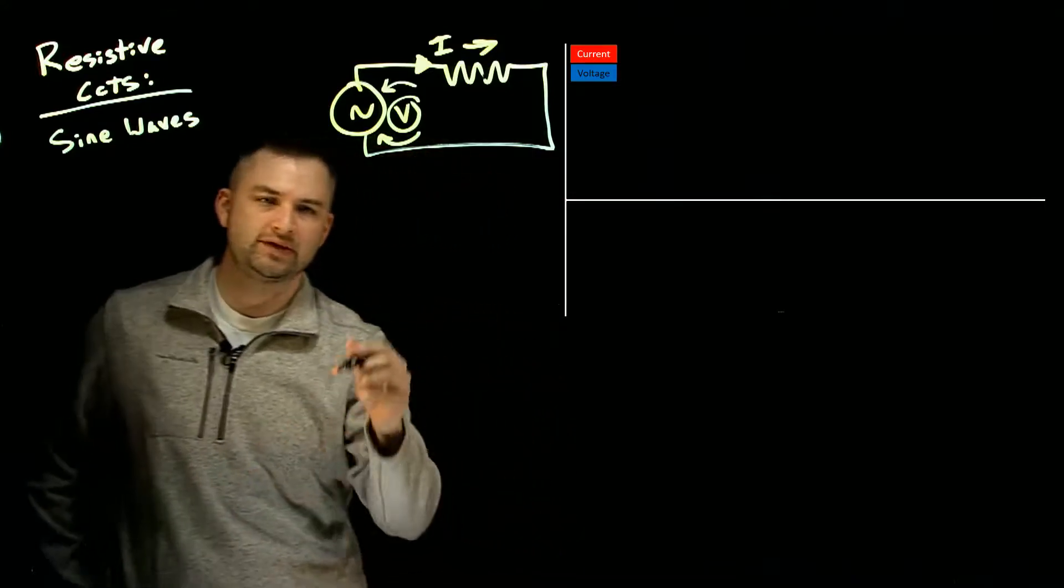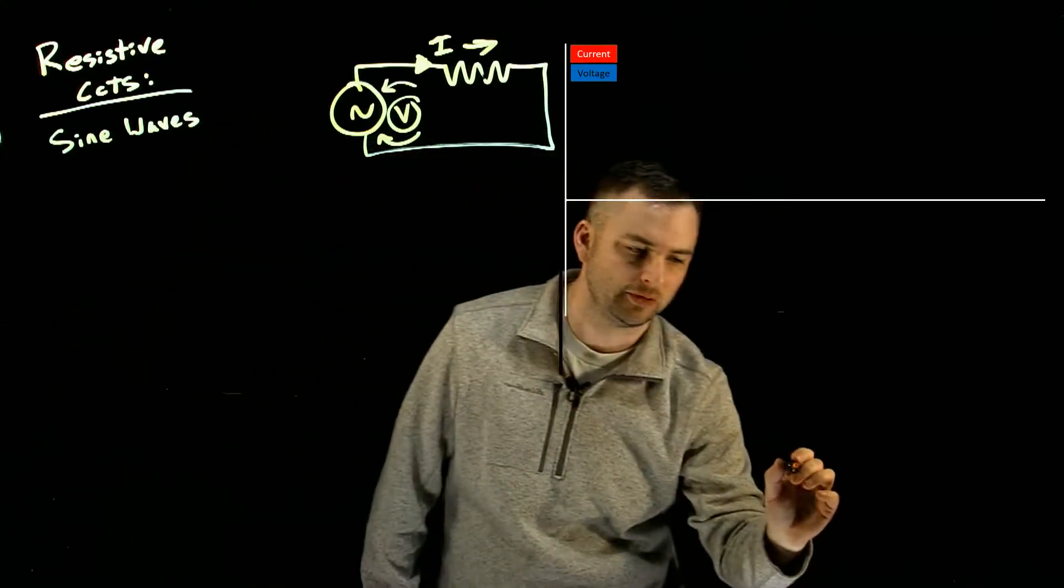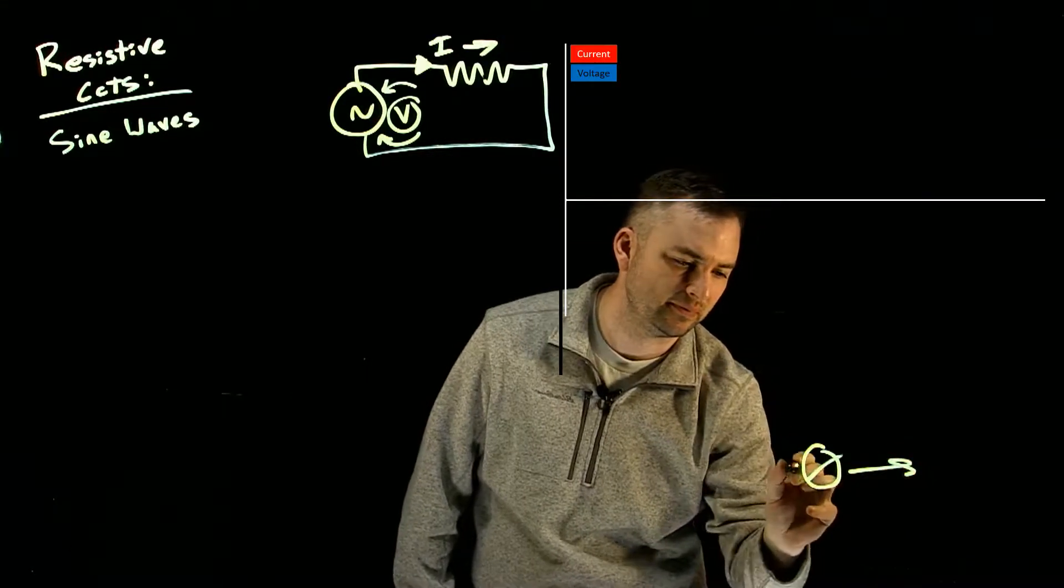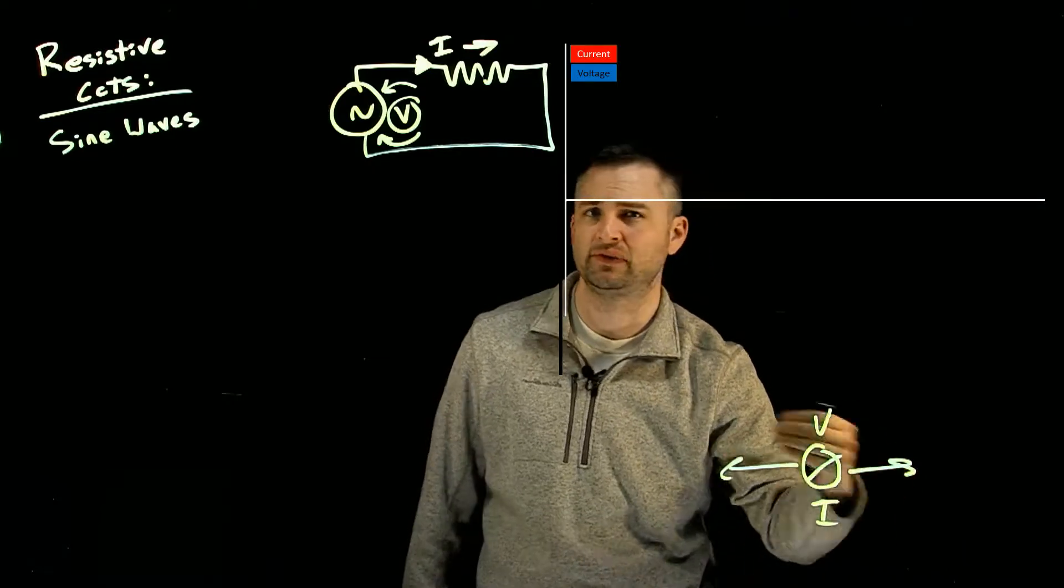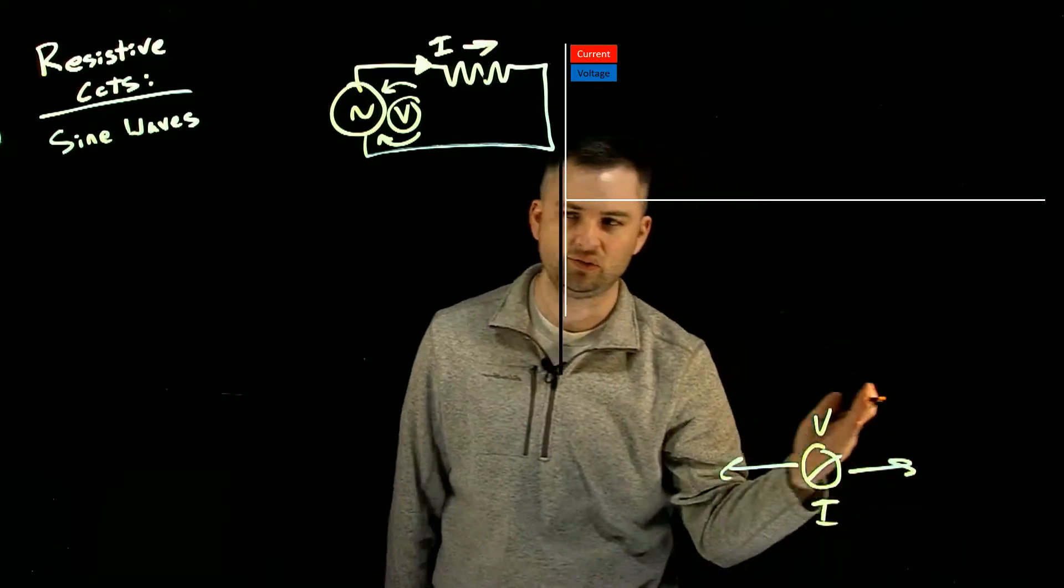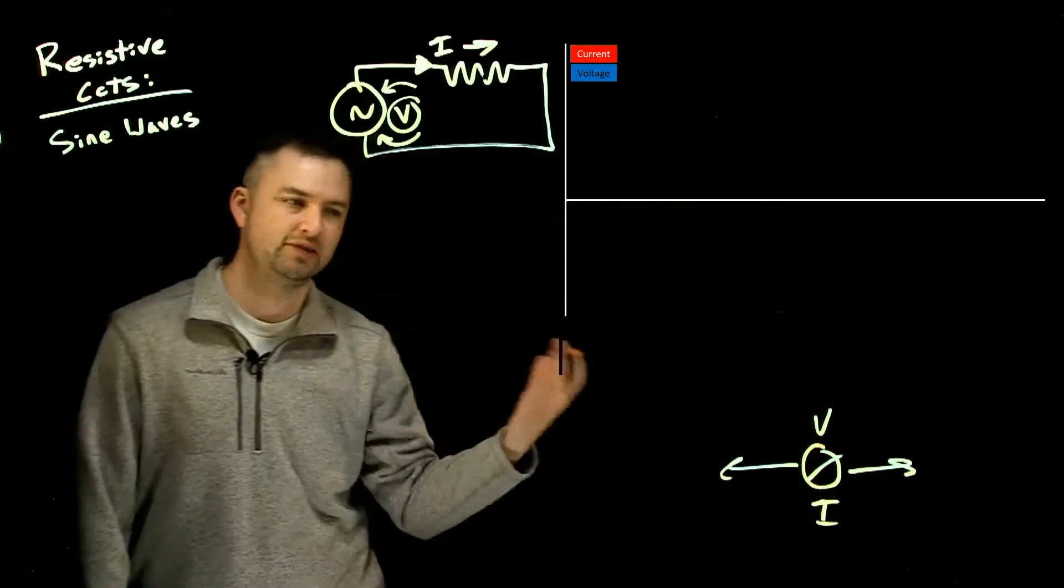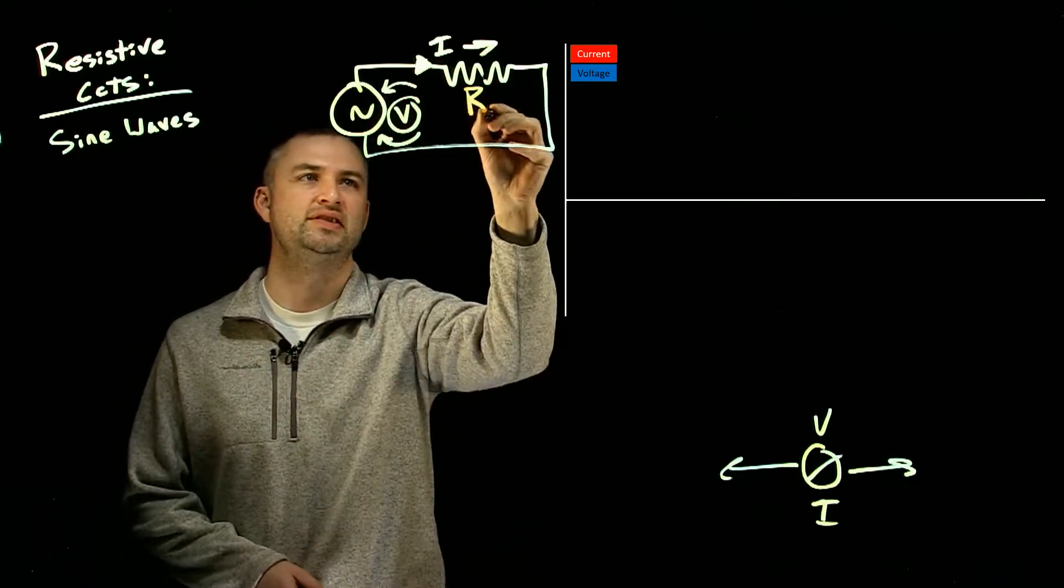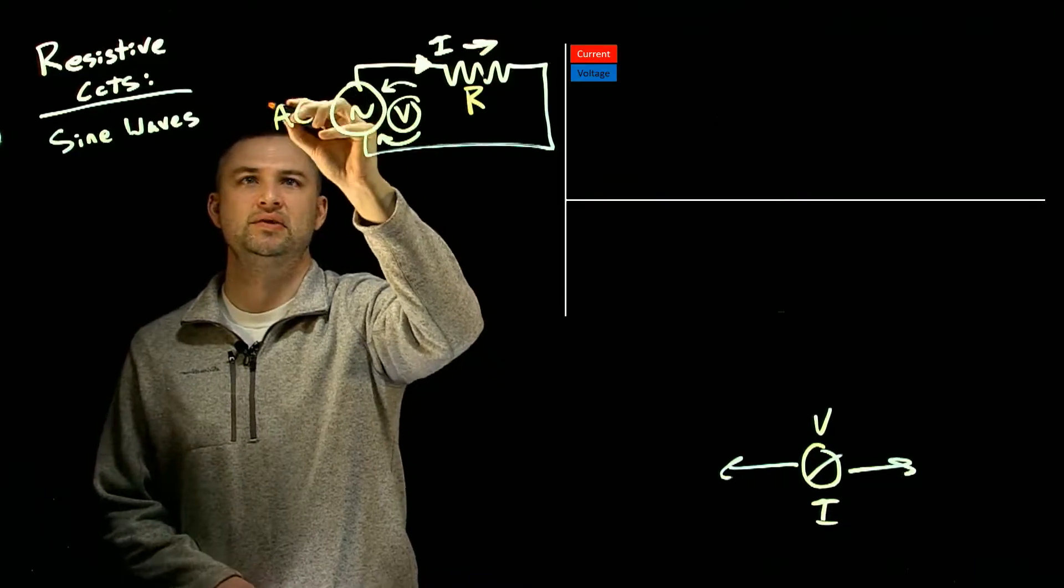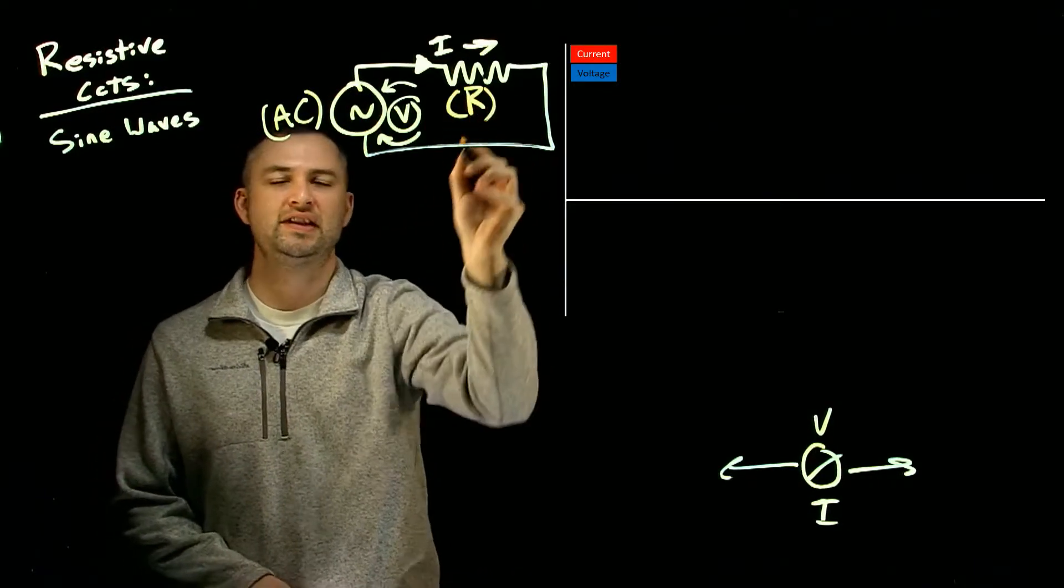Okay, so we're looking for the phase relationship between voltage and current. Phase means the shift of left or right between two waves. What we want to do then is see exactly what's happening in a purely resistive circuit. So I've got a resistor here and I've got an AC source. Okay, so let's have a look.